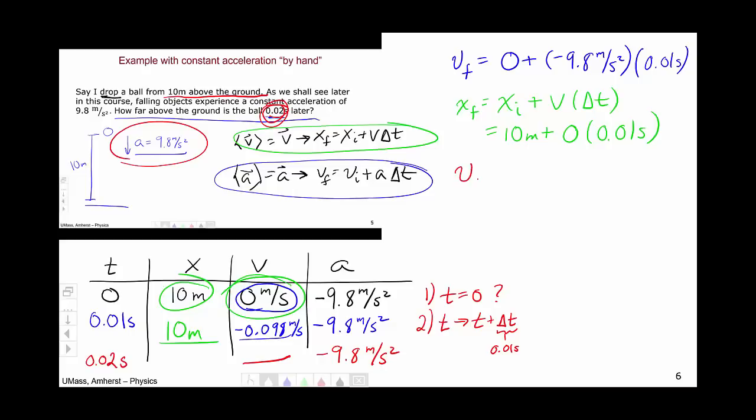Now we're solving at 0.02. V-f. Now I have a v-i, this quantity: minus 0.098, plus... Now we plug that into our calculators, and we get negative 0.196 meters per second. So that's what we put in here.